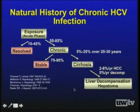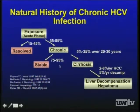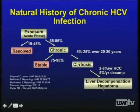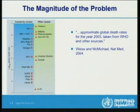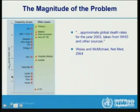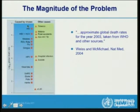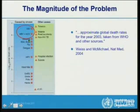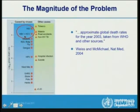This slide summarizes the natural history of chronic HCV infection. Upon acute infection, about 15 to 45 percent of people resolve their infection, but the majority go on to become chronically infected. Most people are stable with chronic infection, but up to 25 percent over 20 to 30 years will develop liver disease including cirrhosis, leading to liver decompensation and hepatocellular carcinoma or liver cancer. Life expectancy is estimated to be shortened by 8 to 12 years in an HCV-infected person.